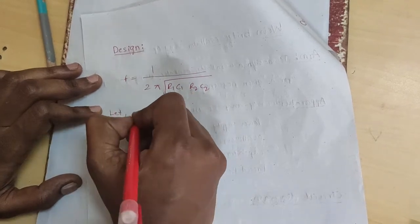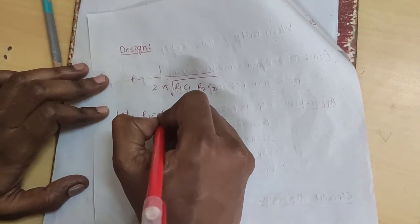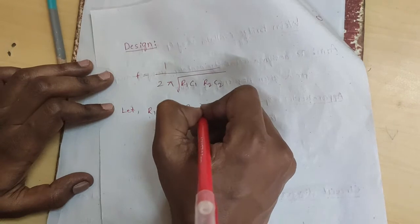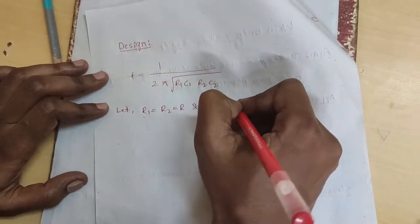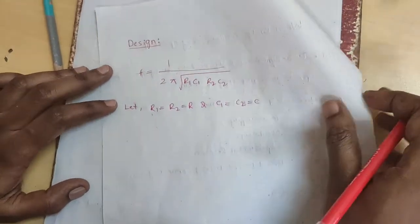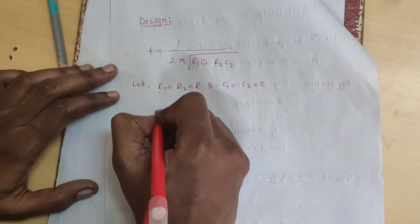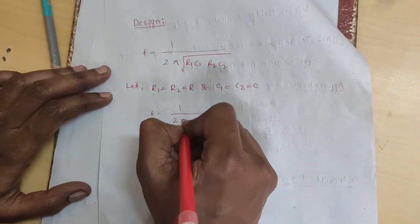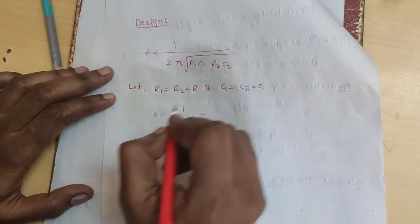Let R1 equal to R2 equal to R and C1 equal to C2 equal to C. So f equal to 1 by 2 pi RC.